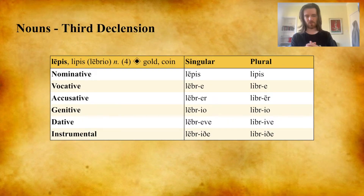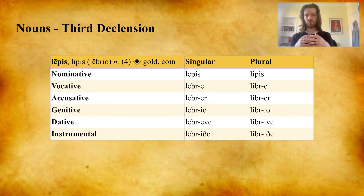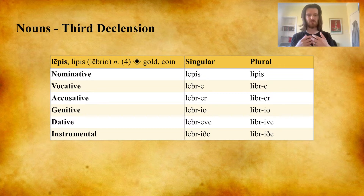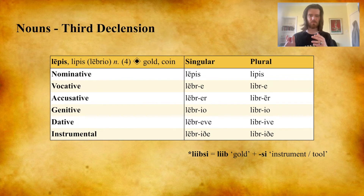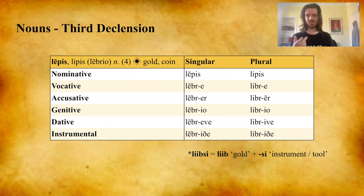You also have quite a few words in the third declension which end in -s in the singular but have a separate stem for the oblique form. So Lepis, which means 'gold,' has the genitive Lebrio, and the stem is therefore Lebre. The plural of Lepis is irregular — Lepis for 'coin,' Lepis for 'coins.' A lot of these words stem from words in Barazni feo that took the suffix -c, meaning 'instrument' or 'tool.'